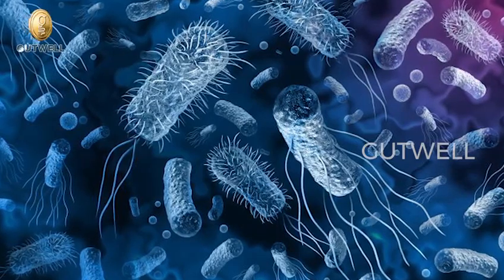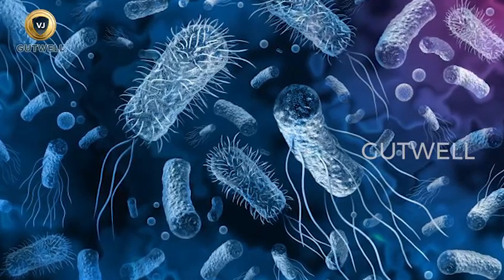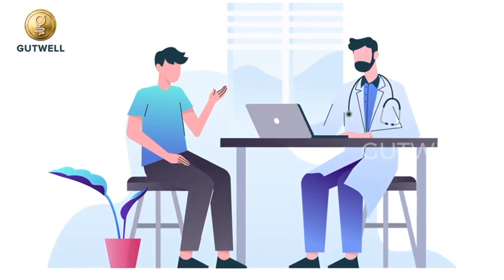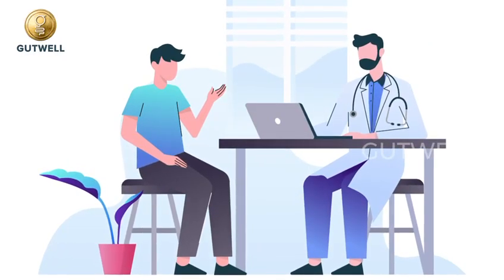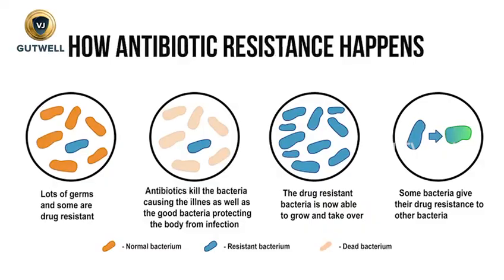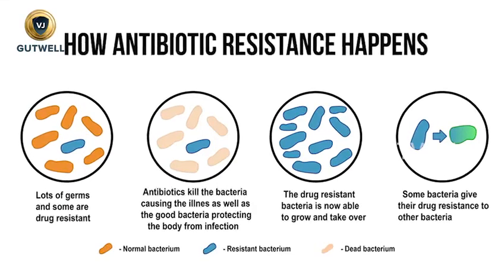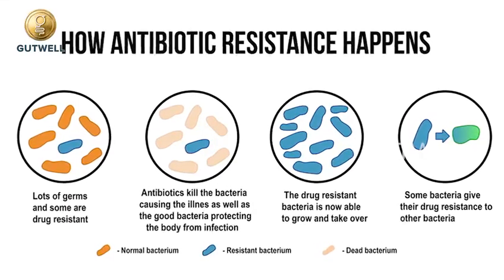In simple terms, superbugs are bacteria that are resistant to antibiotics. This poses a problem to clinicians. When a patient comes in with a bacterial infection, the doctor may prescribe an antibiotic that targets the specific bad bacteria causing the illness. But bacteria are smart and have been around for millions of years, so they can over a period of time mutate to become resistant to this antibiotic, causing it to lose its effectiveness.